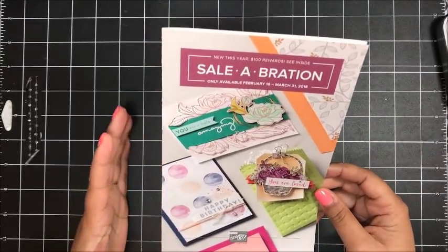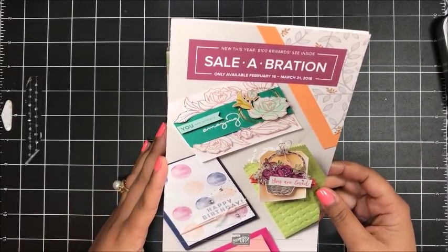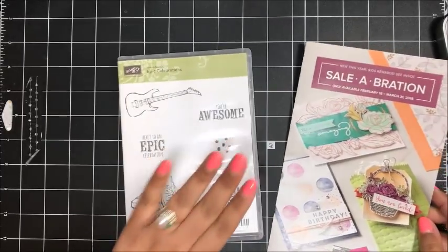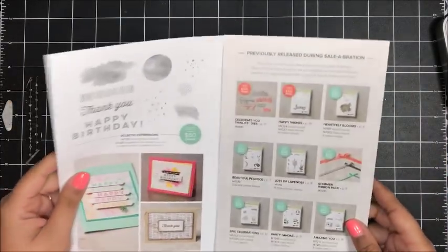That means you can earn the stamp set with a minimum $50 purchase before tax and shipping and you get it for free. Freebies are fantastic. I love Celebration.